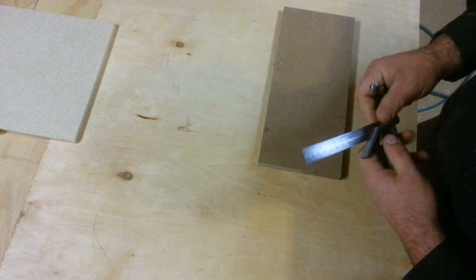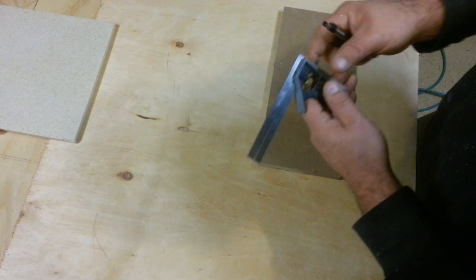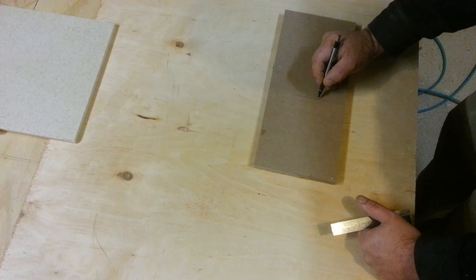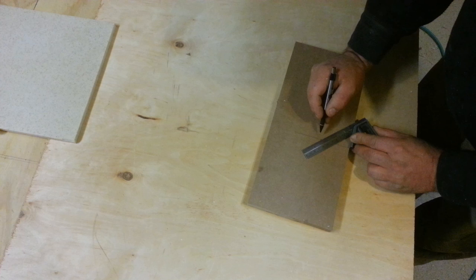Here's another trick that a lot of people don't know when you're checking for square. Don't just trust that your grind on your 45 when you're using a combination square is accurate. Because even though this side might be square, your 45 may not be.